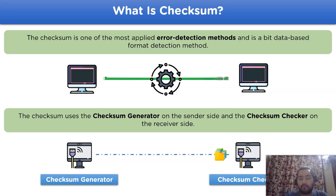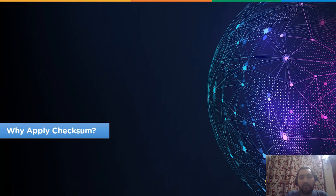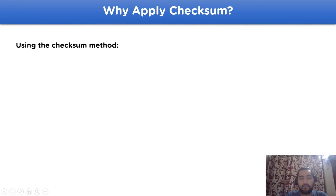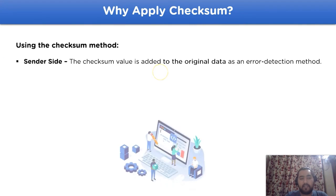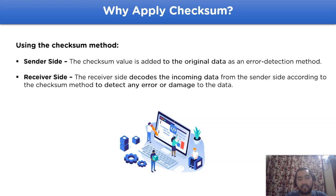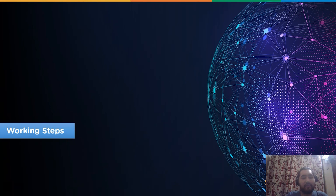Using the checksum method, at the sender side the checksum value is added to the original data to be transferred as an error detection method. At the receiver side, it decodes the incoming data from the sender side according to the checksum method to detect any changes in the given data.